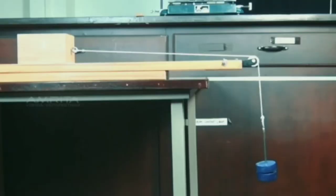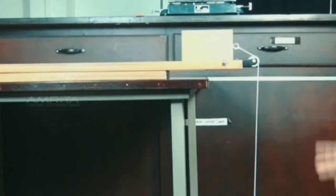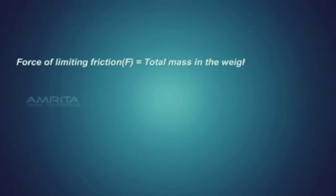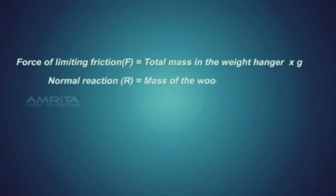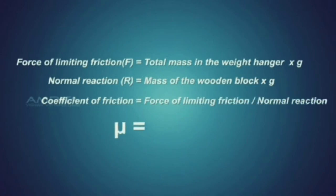Increase the weights in the weight hanger till the block just starts sliding. Note down the total mass added to the weight hanger and multiply it by acceleration due to gravity G, which gives the force of limiting friction F. The normal reaction R is given by the mass M of the wooden block multiplied by acceleration due to gravity G.